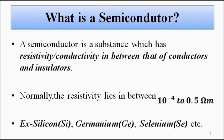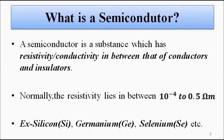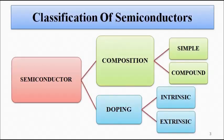Before that, we'll just revisit some basic things quickly. A semiconductor is a substance which has resistance or conductance in between that of conductors and insulators. Normally the resistivity lies between 10 to the power minus 4 to 0.5 ohm-meter. Conductivity is the reciprocal, in Siemens per meter. Examples include silicon, germanium, and selenium — these are elemental or simple semiconductors. There are also compound semiconductors: gallium arsenide, indium phosphide, aluminium gallium nitride, and many more.